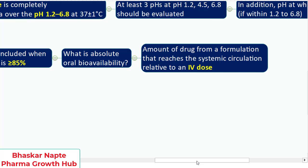Here is the answer for your ready reference: the amount of drug from a formulation that reaches the systemic circulation relative to an intravenous dose. When you are comparing the amount of drug substance available in systemic circulation of the solid oral dosage form as compared to if the same drug substance product is given intravenously, that is called the absolute oral bioavailability.